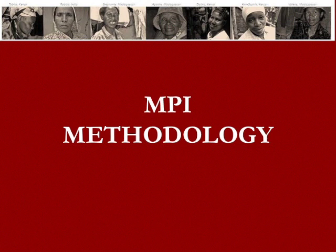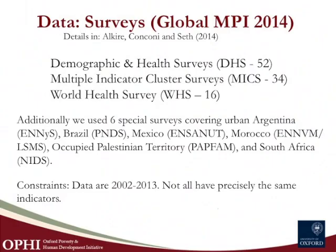In terms of the methodology, the MPI draws on three global surveys primarily: the Demographic and Health Surveys for 52 countries this year, the Multiple Indicator Cluster Surveys for 34 countries, and the World Health Survey for 16 countries. In six countries, we use special surveys that are national in character. All of the data are from 2002 to 2013, and not all data sets have the same number of indicators or precisely the same definition, with all details thoroughly documented in our materials.